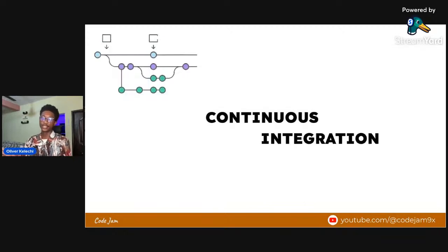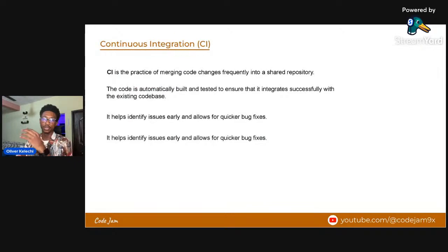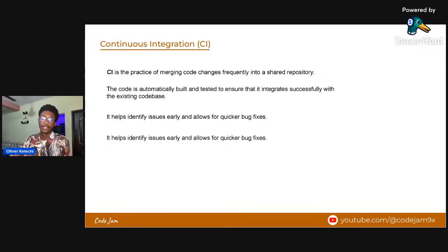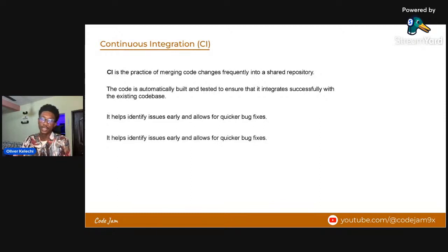The first part of CI/CD is Continuous Integration. This has to do with code changes - how you integrate code, because code is the value of your business. Continuous Integration involves developers coming together, contributing code, raising PRs, building new features, fixing bugs, and creating chores. It's the practice of merging code changes frequently into a shared repository using something like Git, a distributed version control system. The code is automatically built and tested to ensure it integrates successfully with the existing codebase.